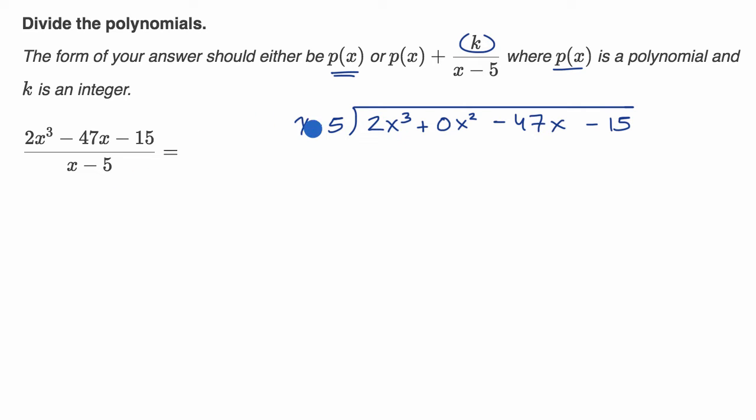And first we could say, hey, how many times does x go into the highest degree term here? Well, x goes into 2x to the third power, 2x squared times. And we'd want to put that in the second degree column. 2x squared.